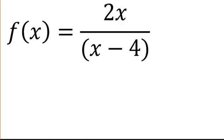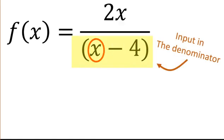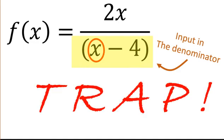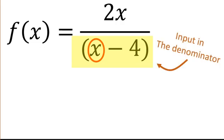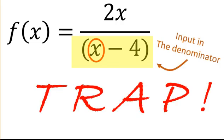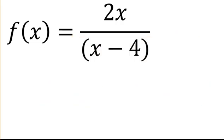So you got a function, inputs up and dash. Denominator, player, it's a trap. So you got a function, inputs up and dash. Denominator, player, it's a trap.